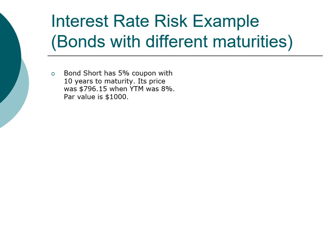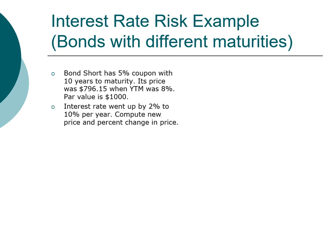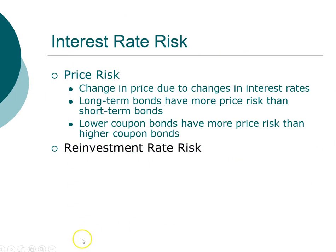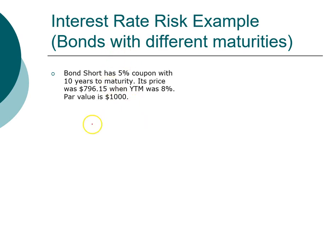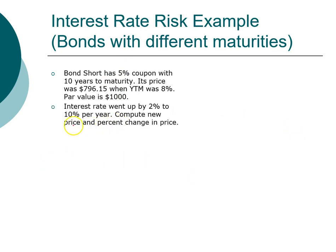We're going to look at what happens to the price of this bond if interest rate goes up. Currently the interest rate is 8%, so we'll examine what happens if interest rate goes up to 10% — in other words, up by 2%. We need to compute the new price and the change in the bond's price, so we have to do two things: compute the new price and compute the change in price.